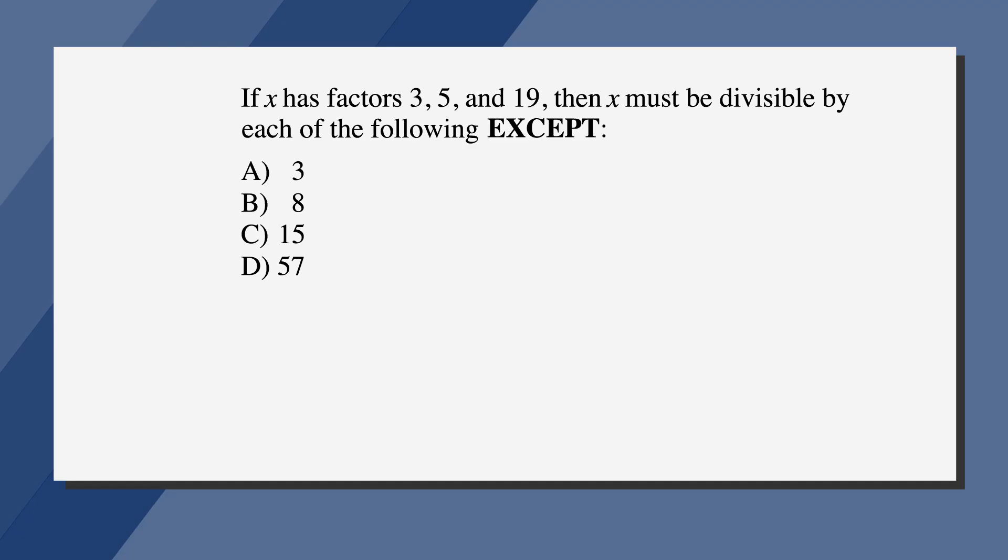If x has factors of 3, 5, and 19, then x must be divisible by each of the following except. Our answer choices are a, 3, b, 8, c, 15, and d, 57.